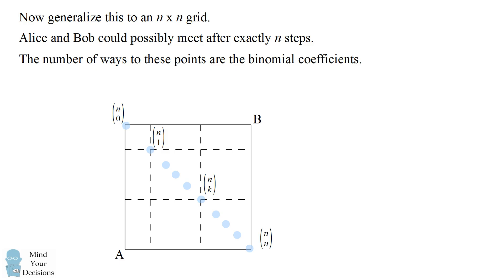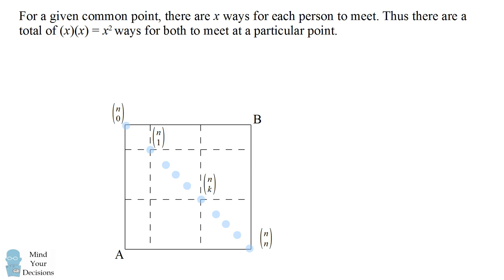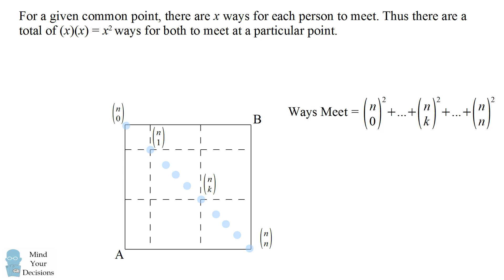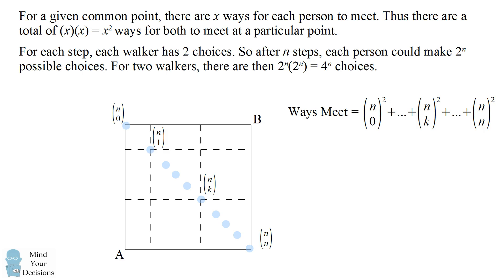For each of these points there are x ways for each person to get there, so there are x squared ways for both to get to that point. The number of ways they could meet is the sum of these squared binomial coefficients. After n steps each person has 2^n possible choices, so for two walkers there are 2^n times 2^n, which equals 4^n choices. Before dividing to get the probability, I'm going to simplify the sum of squared binomial coefficients.